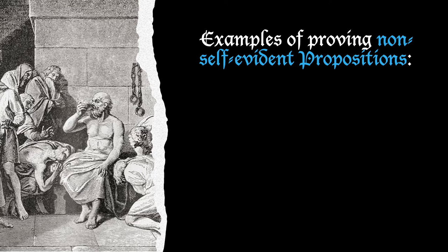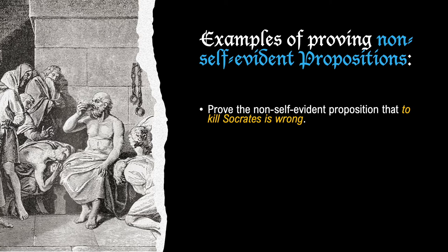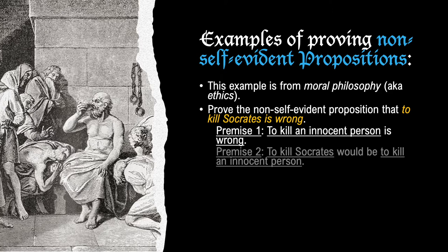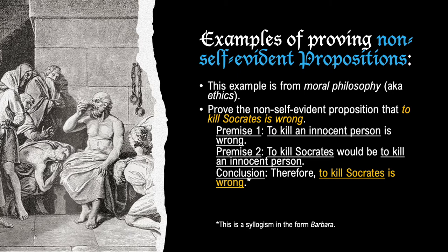Here's another example of proving a non-self-evident proposition, this time from moral philosophy or ethics. We prove that 'to kill Socrates is wrong.' Premise 1 — to kill an innocent person is wrong; Premise 2 — to kill Socrates would be to kill an innocent person; Therefore, to kill Socrates is wrong.